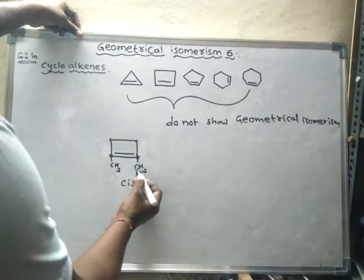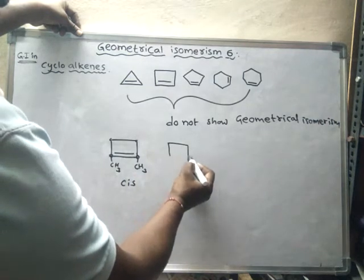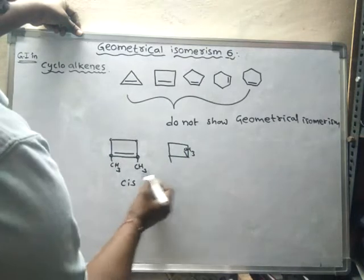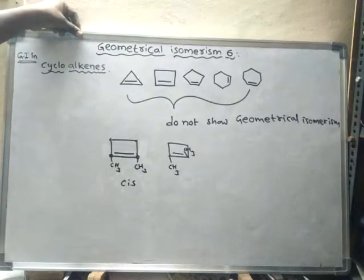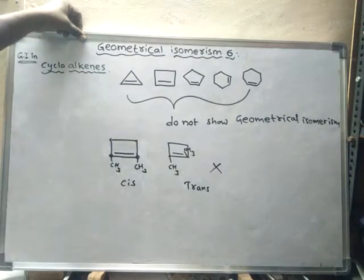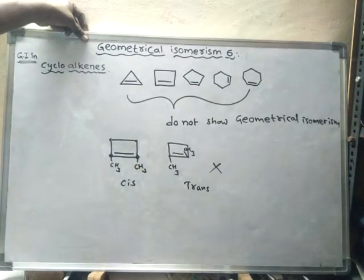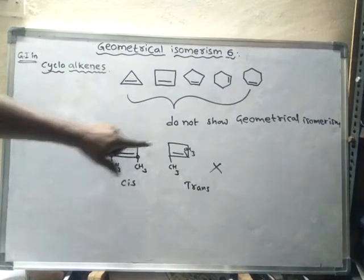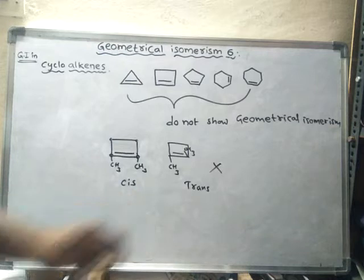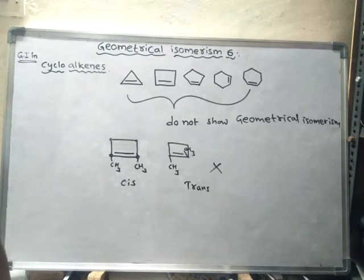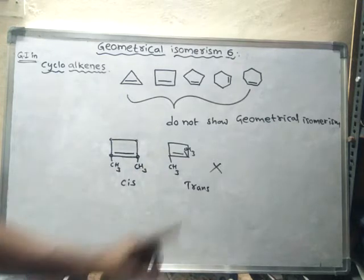Since these two groups are similar, this is the cis form. To convert it into the trans form, one of the methyl groups would have to go into the ring, but this is not possible because there is already strain in the ring.